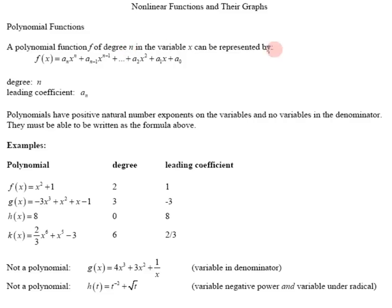For example, a polynomial might look like this. It has negative 3x to the 10th plus x to the 5th minus 3x squared minus 4. The highest power is 10. That's the degree of the polynomial.